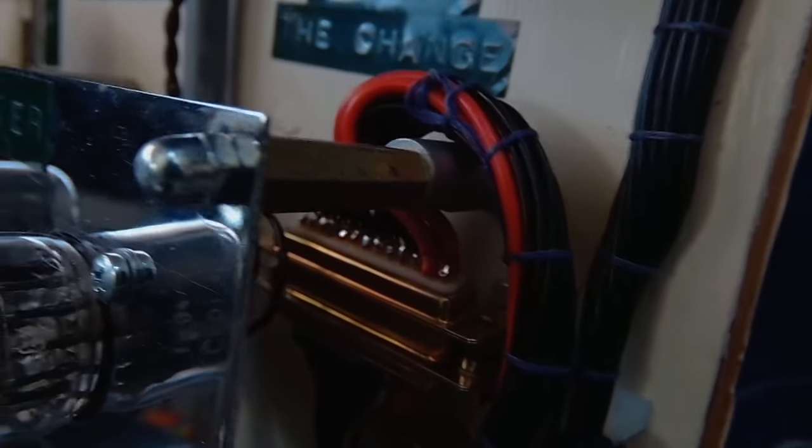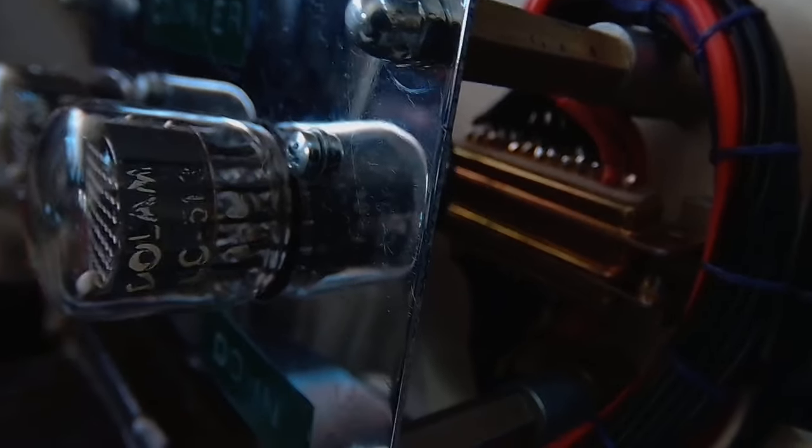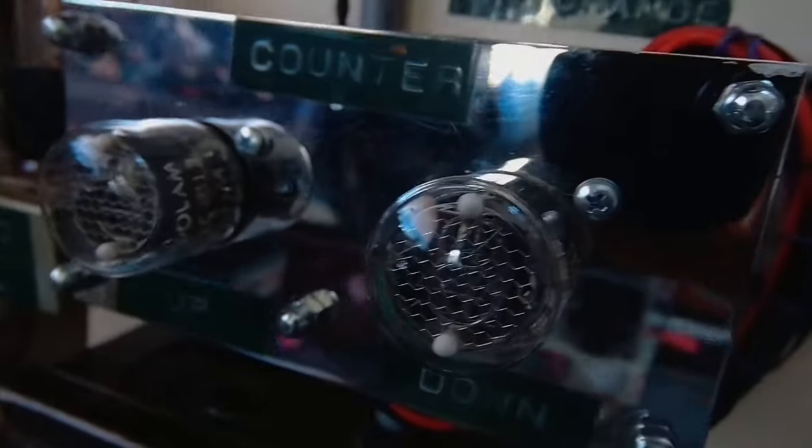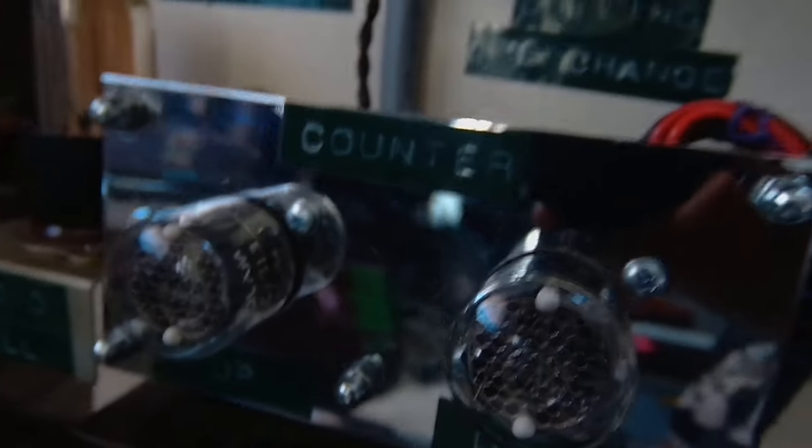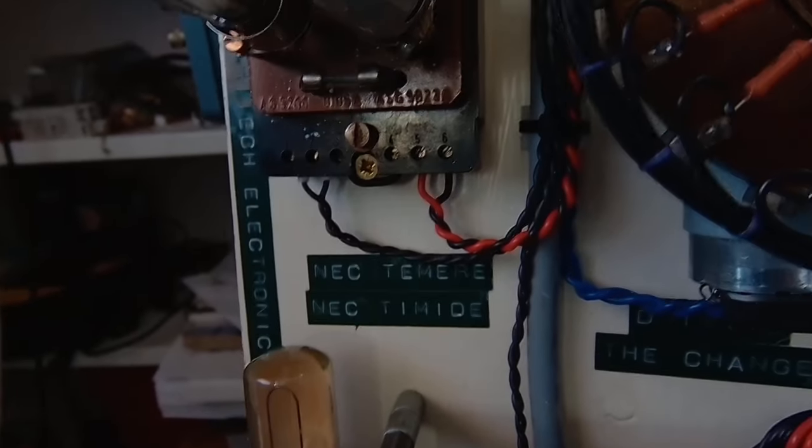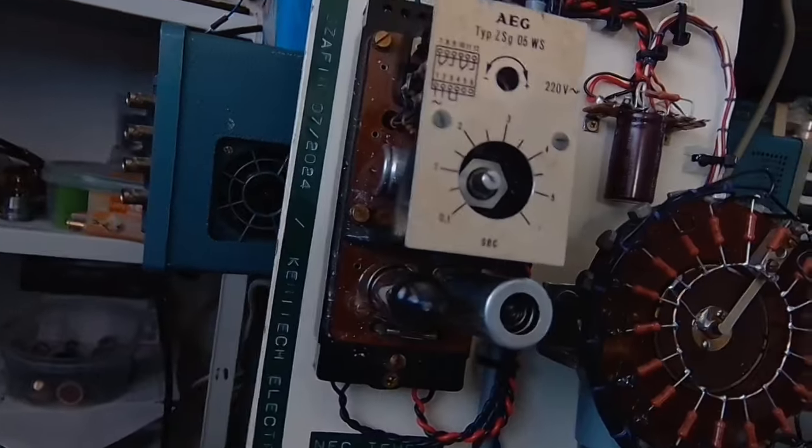This is a D-subminiature connector on the nixie tubes because if I ever get a pair of IN-18 nixie tubes, the big ones, I will just disconnect this and replace the indicator assembly. And that's gonna be a pretty easy mod, easy and quite nice, but those nixie tubes are one hell of an expensive tube.